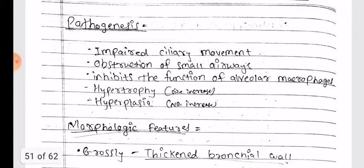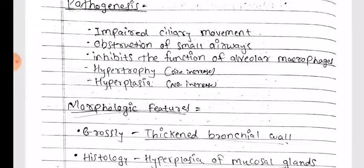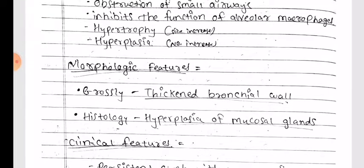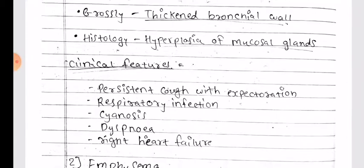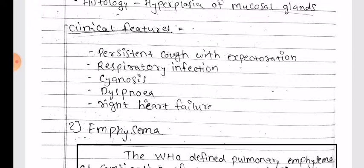Pathogenesis: impairs ciliary movement, obstruction of small airways, inhibits the function of alveolar macrophages, hypertrophy (increase in size) and hyperplasia (increase in number). Morphologic features: grossly thickened bronchial walls; histologically, hyperplasia of mucous glands. Clinical features: persistent cough with expectoration, respiratory infection, cyanosis, and dyspnea.